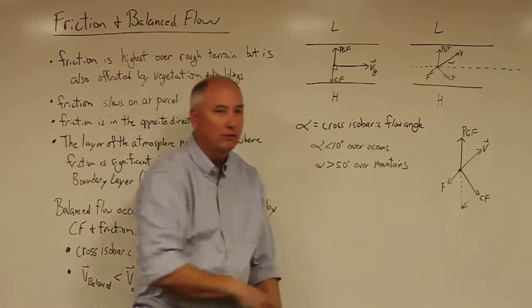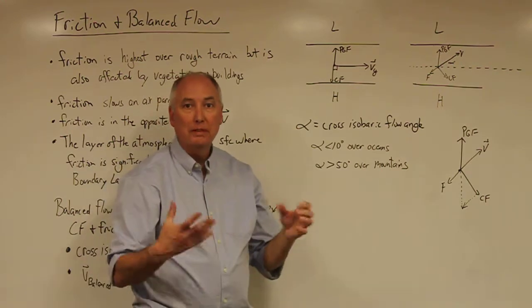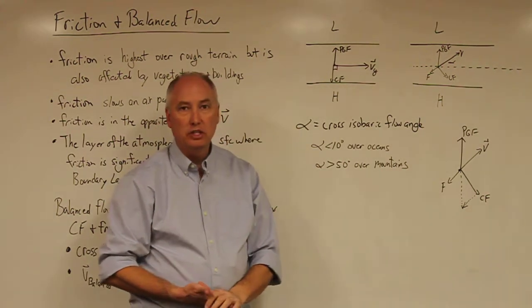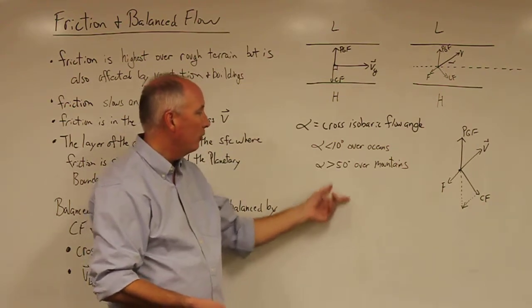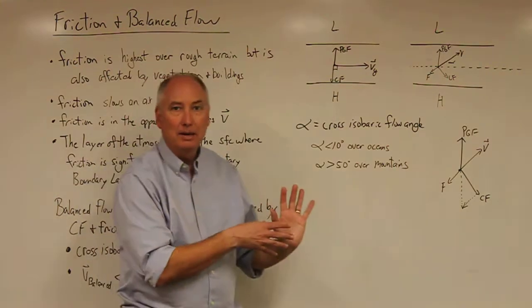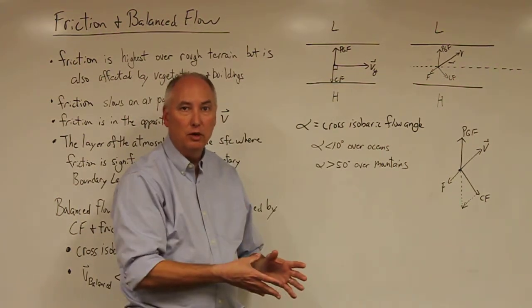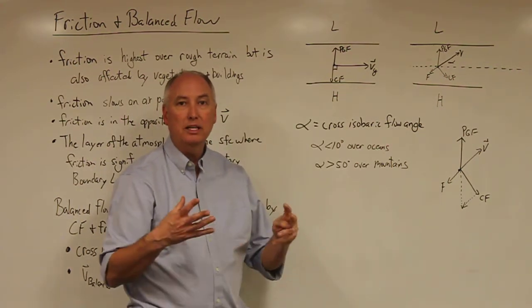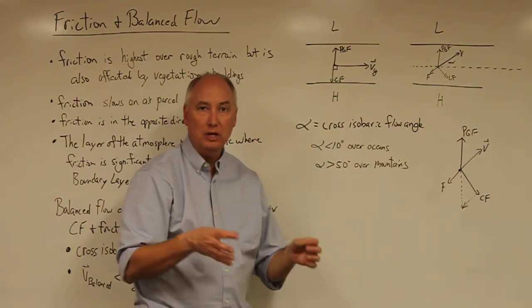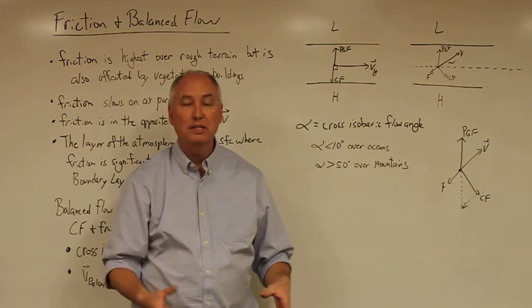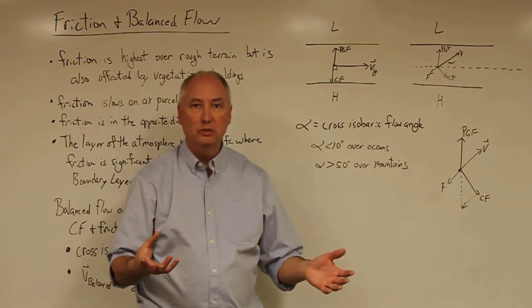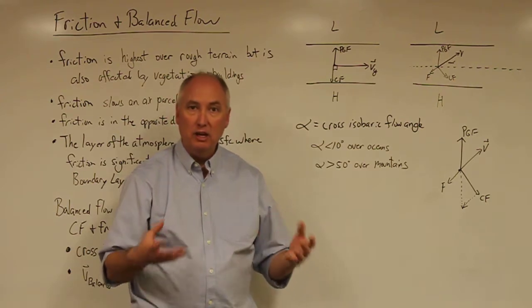This cross isobaric flow angle is controlled by the surface characteristics. It's less than 10 degrees over the oceans near the surface, and over mountainous terrain it can be greater than 50 degrees. The nice thing about the balance flow is that it actually allows divergence and convergence to occur at the surface within the planetary boundary layer, which allows the high and low pressure zones to change over time.